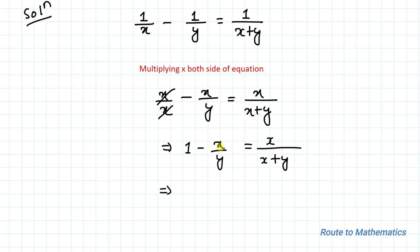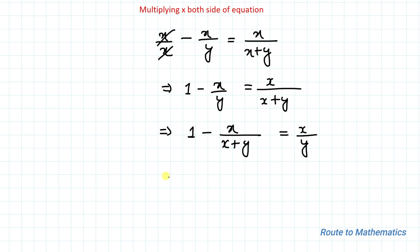Now taking -x/y to the right-hand side and x/(x+y) to the left-hand side, we have 1 - x/(x+y) = x/y. Taking LCM, we have [(x+y) - x]/(x+y) = x/y.